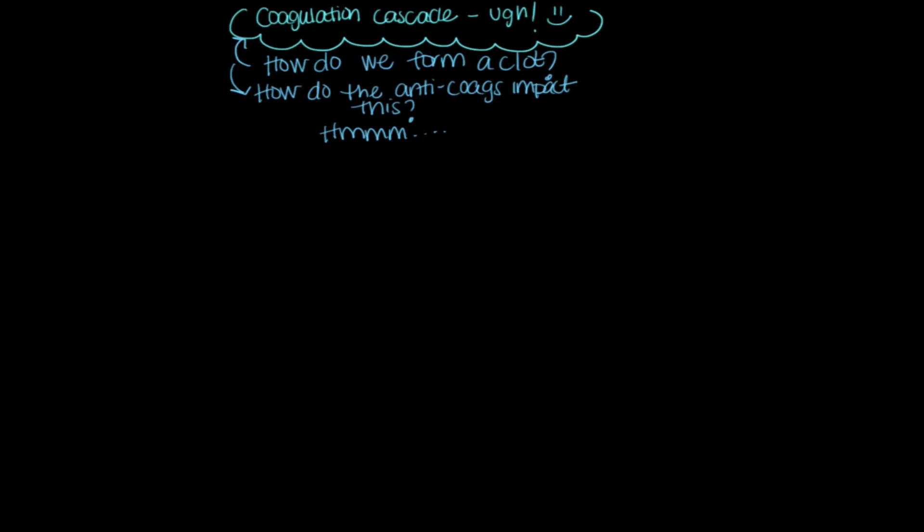There are two pathways with the coagulation cascade: intrinsic and extrinsic. The extrinsic pathway is the easiest one, it's very short. So we're going to start with the intrinsic, which is the longest one. What I want you to remember is that the intrinsic pathway is important in amplifying the cascade, whereas the extrinsic is important in initiating the actual cascade.